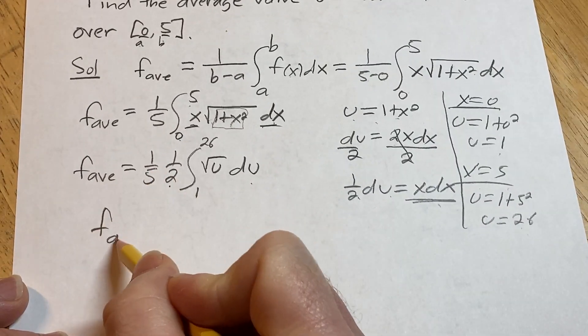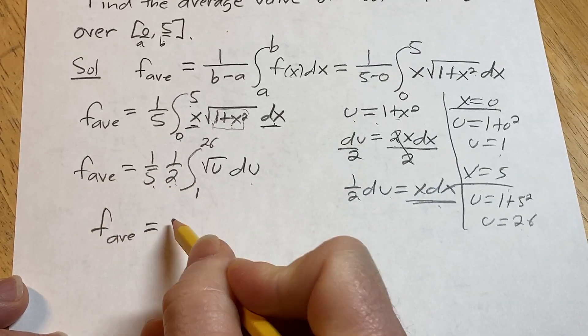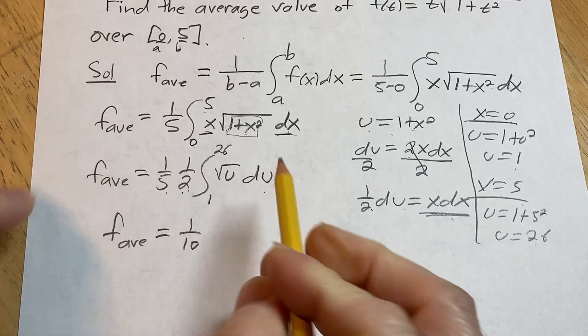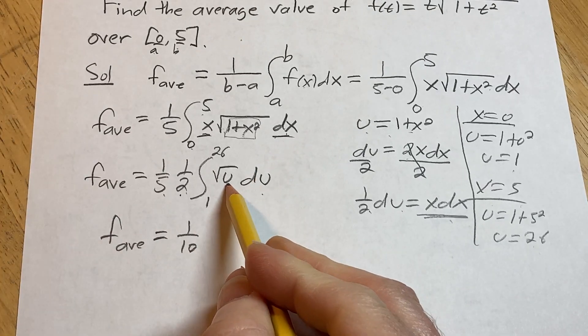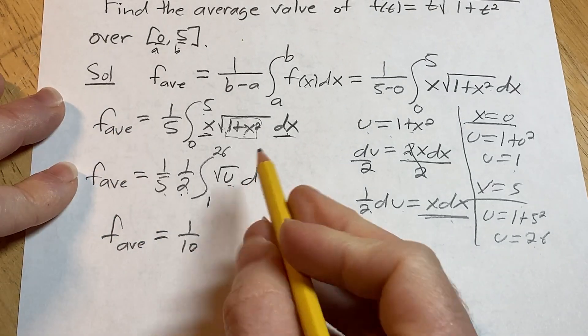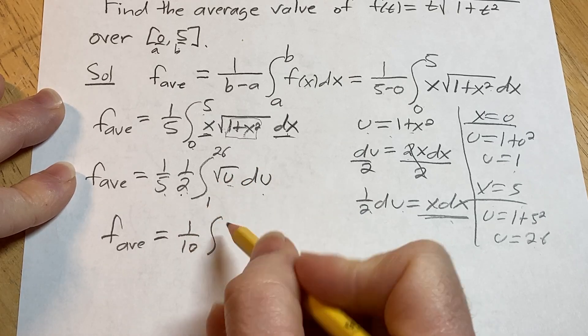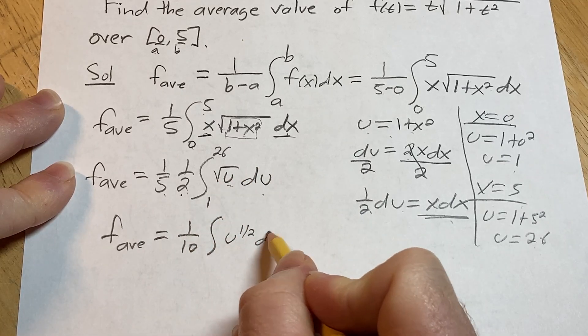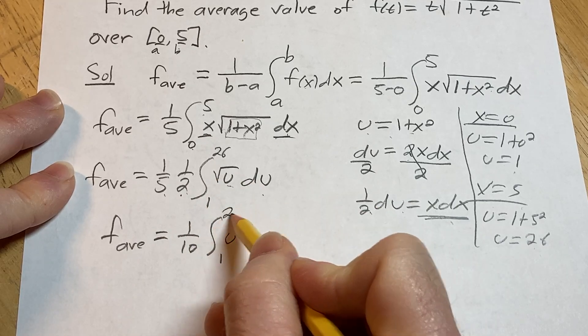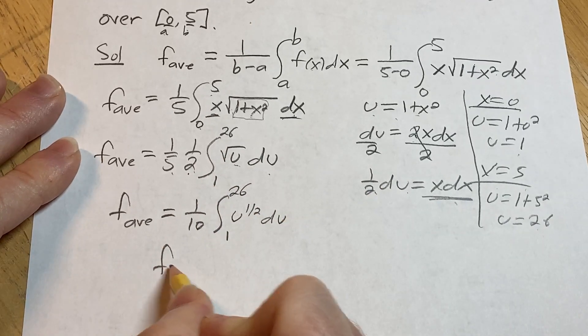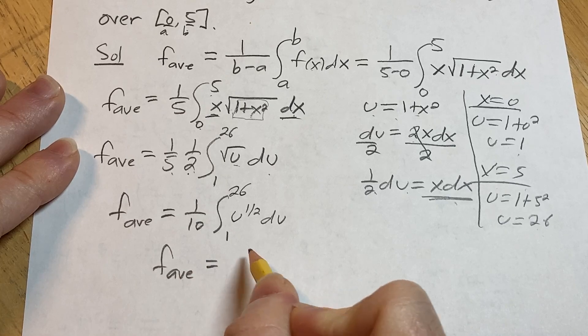So the average value of a function. 5 times 2 is 10, so we get 1 tenth. Let's rewrite this in a convenient way so we can integrate it. So we know that the square root of u can be written as u to the 1 half du, and then we still have our limits going from 1 to 26.